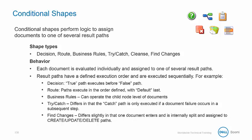Conditional shapes perform logic to assign documents to one of several result paths. These include decision, route, business rules, try-catch, cleanse, and find changes.